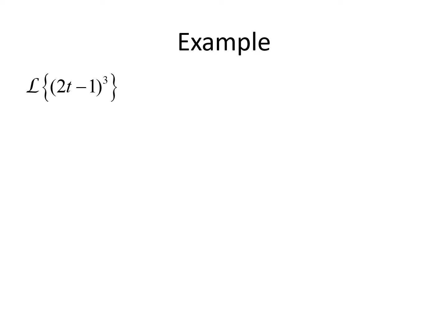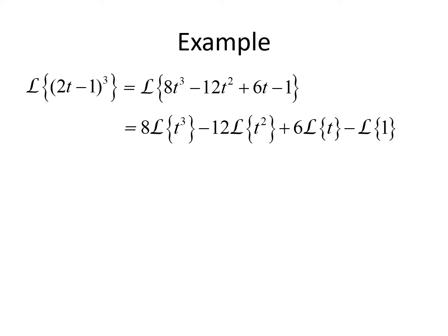Next we want to find the Laplace transform of 2t minus 1, quantity cubed. We don't have a formula for a function raised to a power, so we need to expand first. Multiplying out 2t minus 1 times 2t minus 1 times 2t minus 1 gives 8t cubed minus 12t squared plus 6t minus 1. Taking the Laplace transform term by term: 8 times the Laplace transform of t cubed, minus 12 times the Laplace transform of t squared, plus 6 times the Laplace transform of t, minus the Laplace transform of 1.